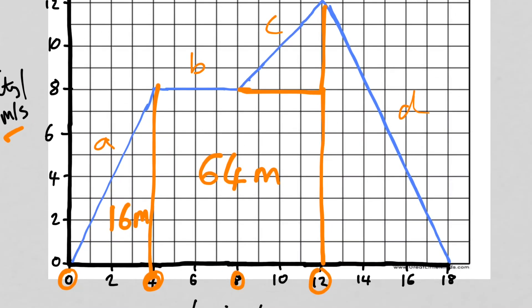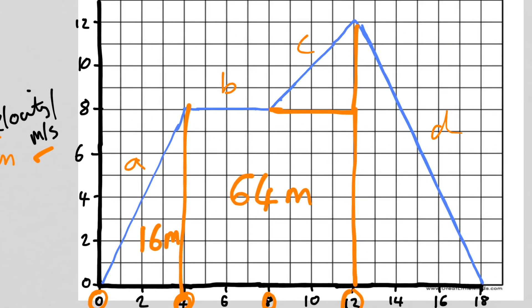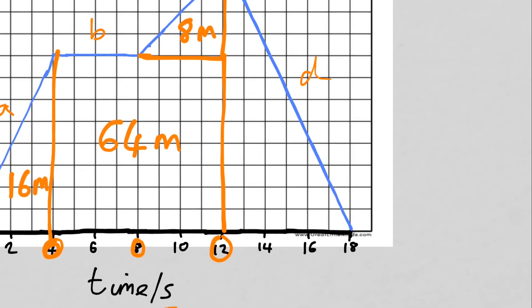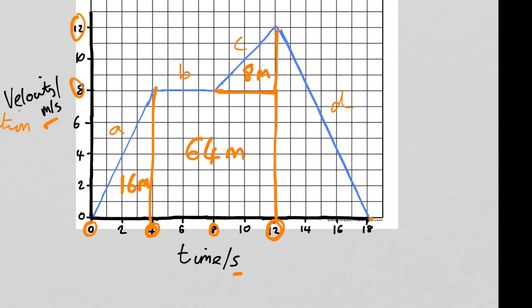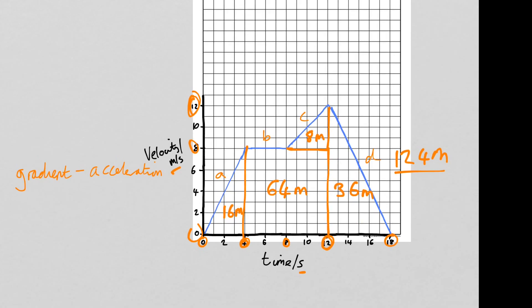For the second triangle, the base goes from 8 to 12, so the base is 4 — half of that is 2. The height also goes from 8 to 12, so it's 4. Two times 4 gives 8 meters. For the final triangle, the base goes from 12 to 18, which is 6 — half is 3. The height goes from 0 to 12. So 3 times 12 gives 36 meters. Adding them all together: 16 plus 64 plus 8 plus 36 gives a total of 124 meters.